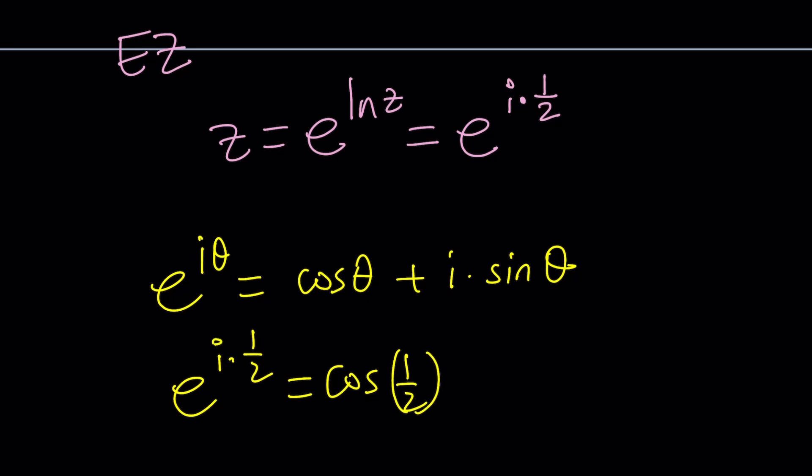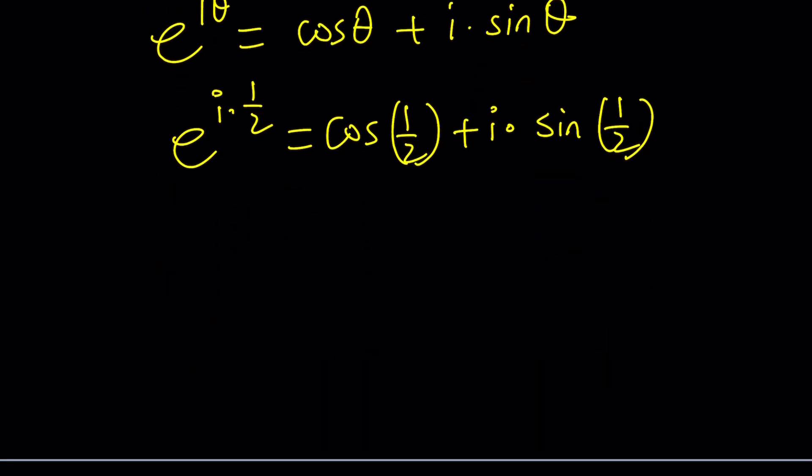e to the power i times 1 half is going to be cosine of 1 half, which is θ, plus i times sine of 1 half. What is 1 half? In radians, whatever that answer is, π over something, whatever, a fraction of π, but that's what it is.